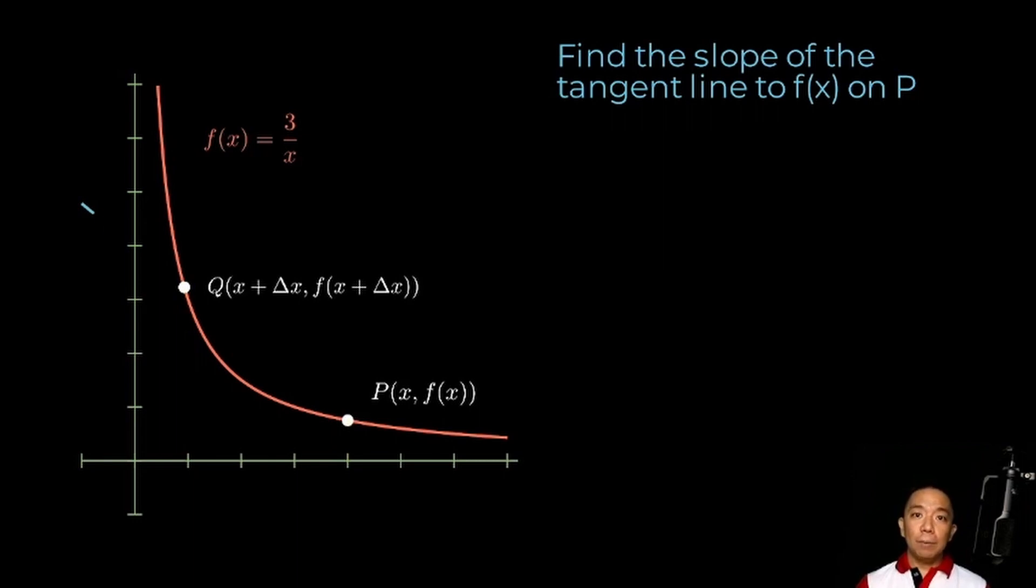What we'll do next is we'll connect point Q and point P with a line. This would be a secant line to the curve kasi it passes through two points. We already know that the horizontal distance is delta x. And the vertical distance will be given by f of x plus delta x minus f of x. Bali yung y-coordinate ni point Q minus y-coordinate ni point P.